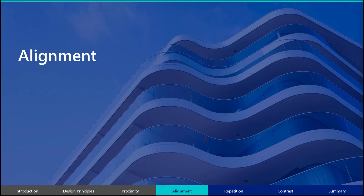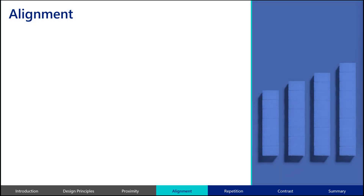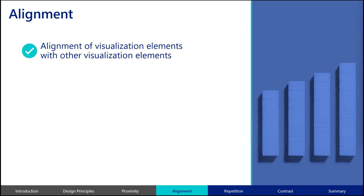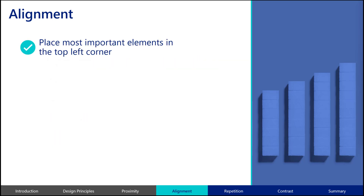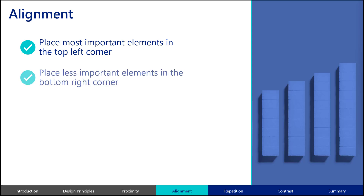Another relevant principle of design is alignment. Alignment isn't just about using left or right alignment of graphs, text, and numbers, but also refers to how elements in your data visualizations align with other elements to indicate a relationship between them. Many people tend to read left to right and top to bottom, so consider positioning the information on your dashboards in this order as well. Place the most important information in the top left corner of the page, with supporting or less important information placed toward the bottom right corner of the page. Alignment of elements in your dashboard can simplify where your audience has to look and guide them to read the information in a structured or prescribed order.